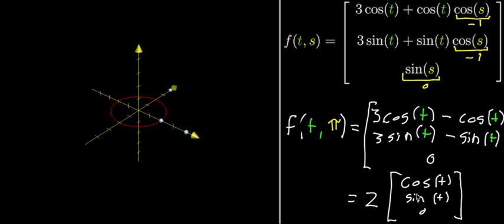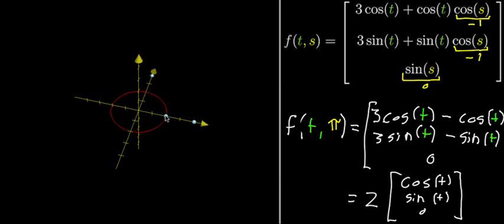And you can maybe see why it's a circle, because you have this cosine, sine pattern. It's a circle with radius two. And it should make sense that it runs through that first point that we evaluated. So that's what happens if you let just one of the variables run.